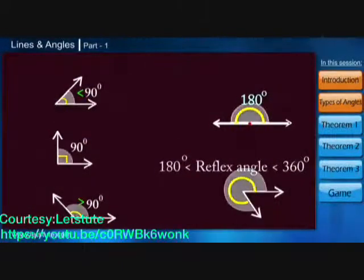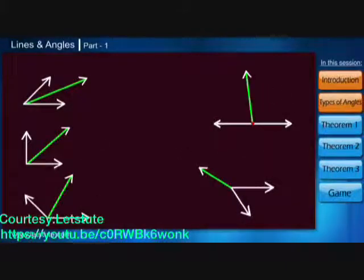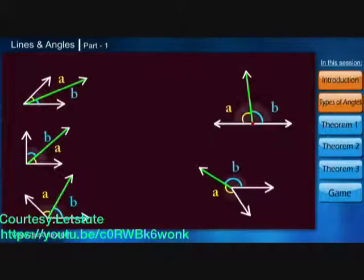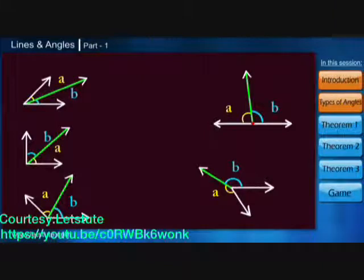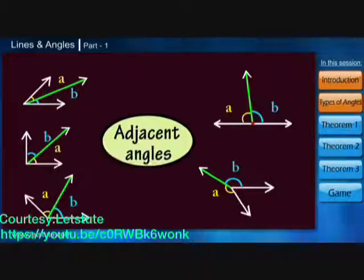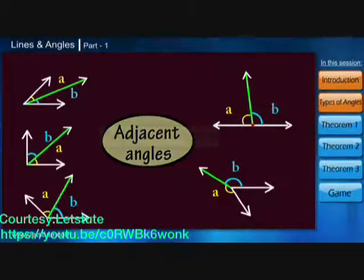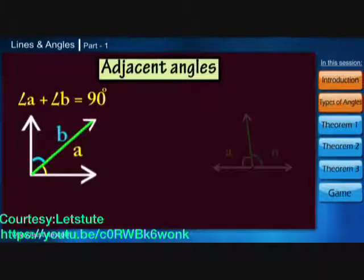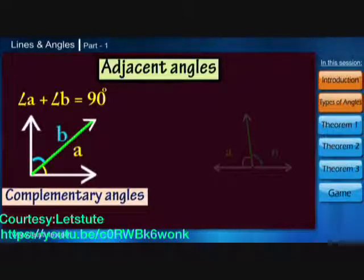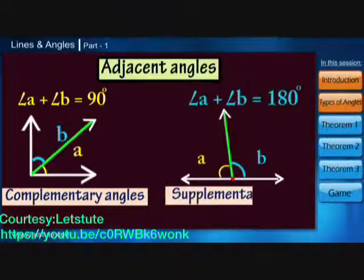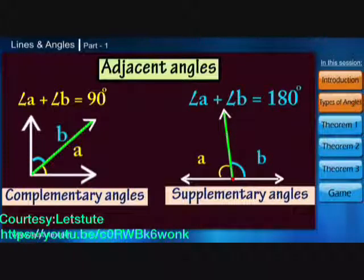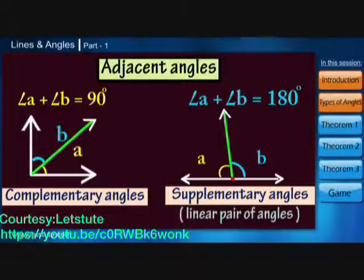Till now we were talking about only one angle, but if we draw one ray between the angle, we now have two angles which have one ray in common. These are called adjacent angles. Adjacent angles can be of various types and measures, but when their sum is 90 degrees they are called complementary angles, and if their sum is 180 degrees they are called supplementary angles, also known as a linear pair of angles.